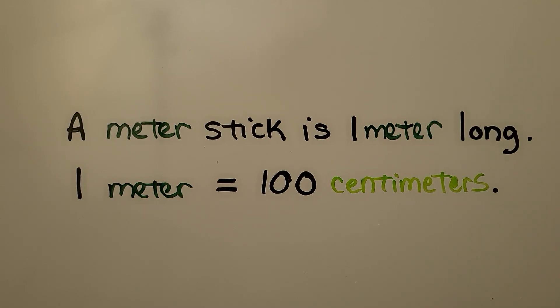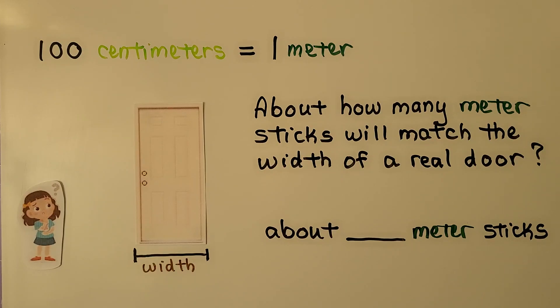A meter stick is 1 meter long, and 1 meter is equal to 100 centimeters. So 100 centimeters is equal to 1 meter.